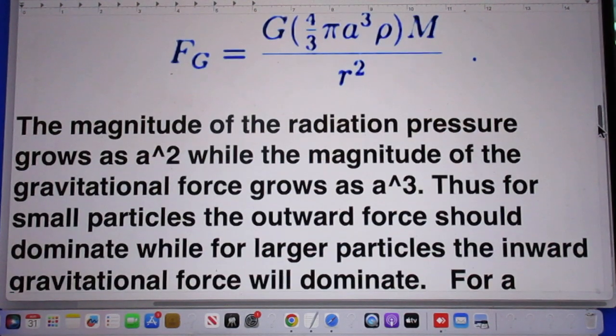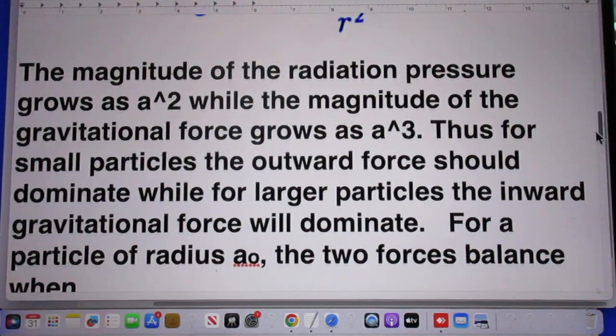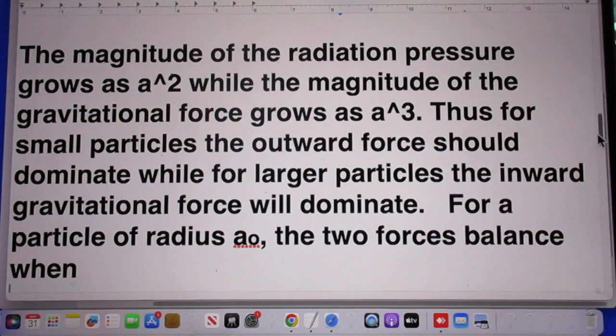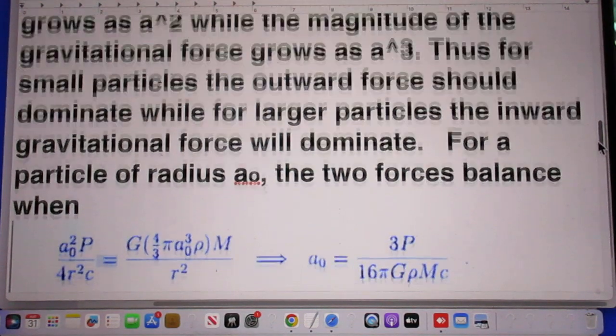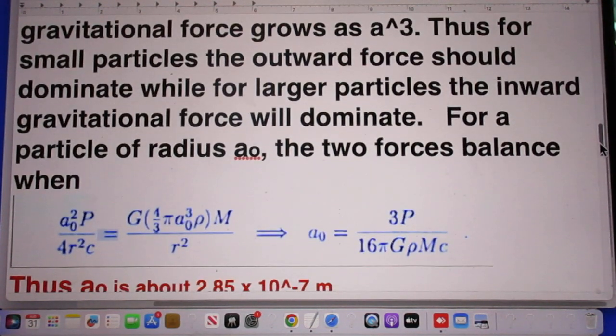The magnitude of the radiation pressure grows as a square. While the magnitude of the gravitational force grows as a cube. Thus for small particles, the outward force should dominate, while for larger particles, the inward gravitational force will dominate.